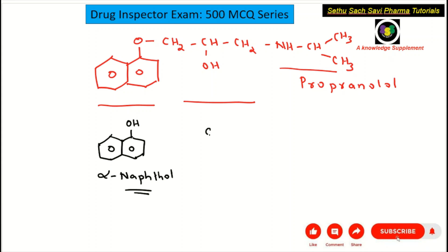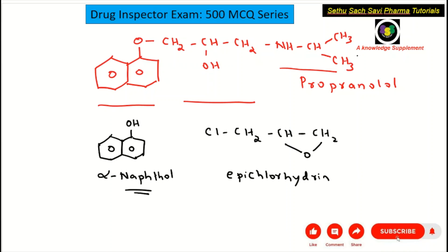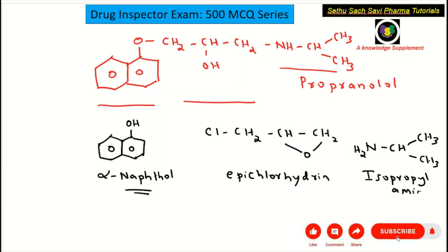To get the middle part, you need the reagent called epichlorohydrin — just remember the name. To get the third part, you need the compound NH2 attached to an isopropyl group, which is called isopropylamine. So these are the three reagents needed for synthesizing the beta blocker propranolol: alpha naphthol, epichlorohydrin, and isopropylamine.